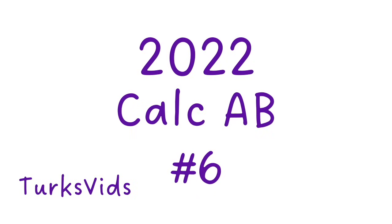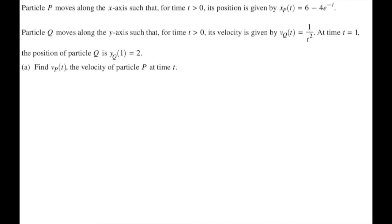In this video, we're doing number 6 from the 2022 Calc AB AP Calculus exam — a particle motion problem with two particles. Particle P moves along the x-axis with position xp of t equals 6 minus 4e to the negative t, for t greater than 0. Particle Q moves along the y-axis with velocity vq of t equals 1 over t squared, and yq of 1 equals 2.